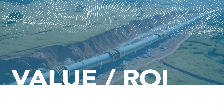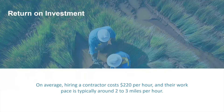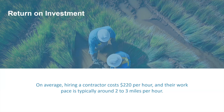In terms of return on investment — hiring a contractor costs about $220 per hour, and their walkable pace is usually two to three miles per hour. Not very quick, and very costly, especially if you've got thousands of miles of pipeline. This can add up to a significant budget item. With satellite imagery, we can come in significantly underneath that cost, giving you the greatest coverage amount across your system as a whole and helping you prioritize where you need to focus.